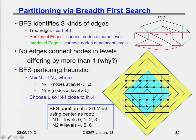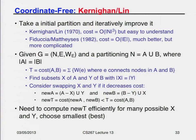Finally, we get to a more sophisticated algorithm called Kernighan-Lin — what Kernighan originally invented to build the telephone network. It's an iterative algorithm: it takes an initial partition and iteratively improves it.